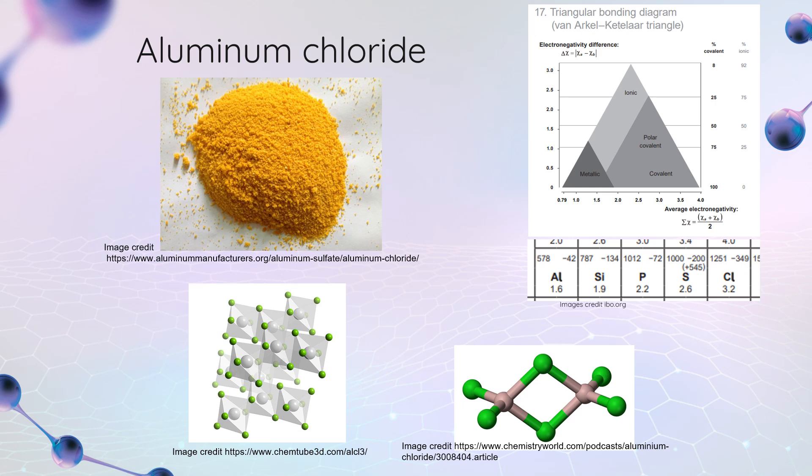Another substance that displays some unexpected properties given its bonding type is aluminum chloride. Aluminum is a metal, chlorine is a non-metal. Metal, non-metal should make an ionic compound that has ionic properties. And aluminum chloride does have some ionic properties, but it also has some covalent properties. Let's look at the electronegativities to figure out why. Aluminum is 1.6 and chlorine is 3.2. The average of these two is going to be 2.4. The difference is 1.6. When I put these on my graph, we're right at the edge of ionic and polar covalent.